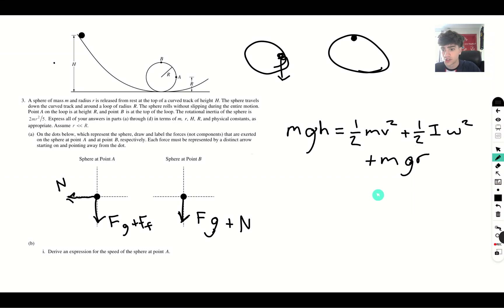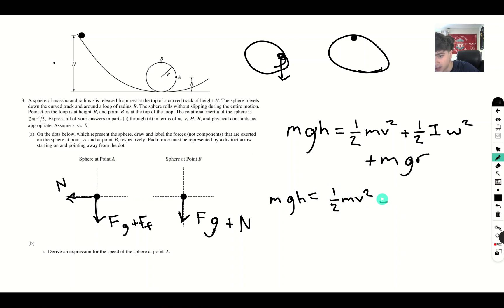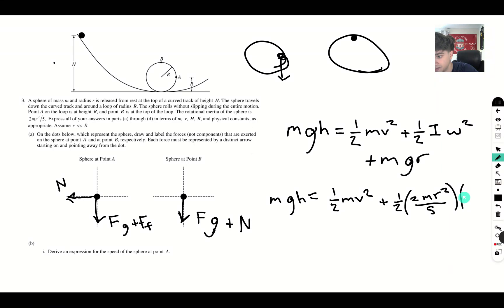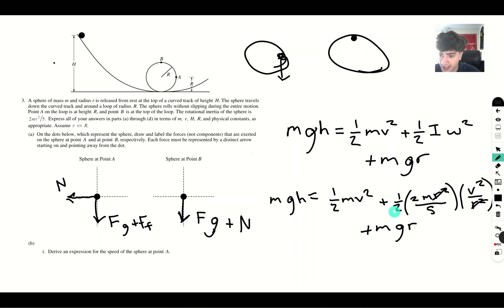Now solving for v — since the ball is not slipping, omega equals v over r. Rewriting the equation: mgh equals one-half mv squared plus one-half times (two mr squared over five) times (v squared over r squared) plus mgr. The r squared terms cancel, the twos cancel, and dividing through by m gives: gh equals one-half v squared plus one-fifth v squared plus gr.